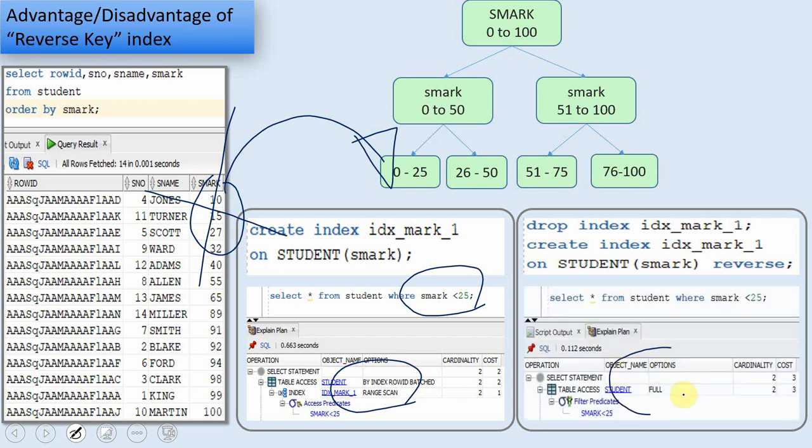it will go for a full table scan. These are the three main key points you need to keep in mind. One is, what is the reverse key index in comparison with B-tree index? The second is what problem reverse key index is trying to resolve and what is the disadvantage of having a reverse key index? The problem reverse key is trying to solve is the index block contention and the reverse key is not suitable for range queries.